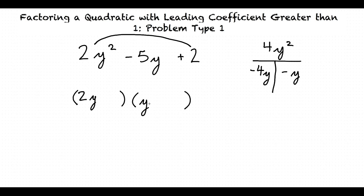Our next step is to look at the first term in our new set of parentheses and our first factor, negative 4y. We figure out what multiplies by 2y to get negative 4y — 2y times what equals negative 4y — which is negative 2. So we put negative 2 in the second set of parentheses. And our last step: we take this y and figure out y times what equals negative y, which is negative 1.